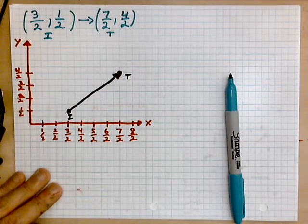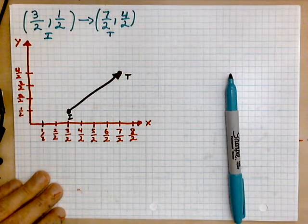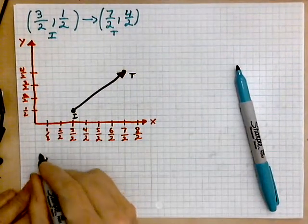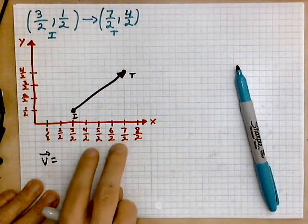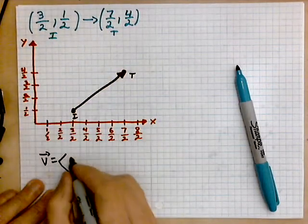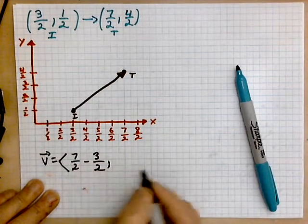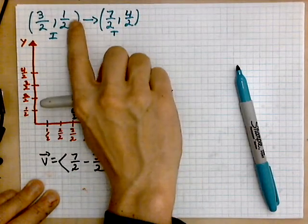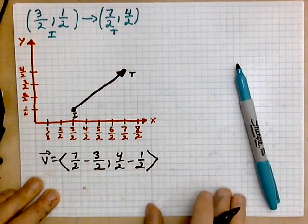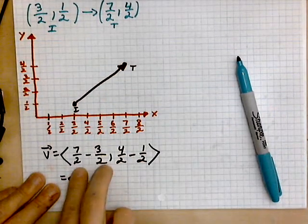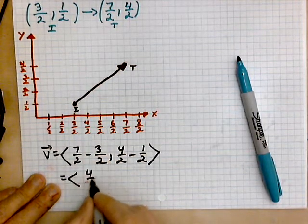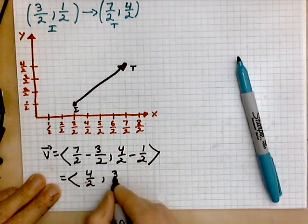The first step is to express this vector in component notation. I will call this vector B. Work on the difference of the x's first: you take seven halves and subtract three halves — seven halves minus three halves. Then you take your four halves and subtract one half for the y-component of the vector — four over two minus one over two. Now we simplify. These are over the same denominators, so we can simply work on the tops. Seven minus three is four, so we have four over two. Four minus one is three, so that's three over two — three halves.